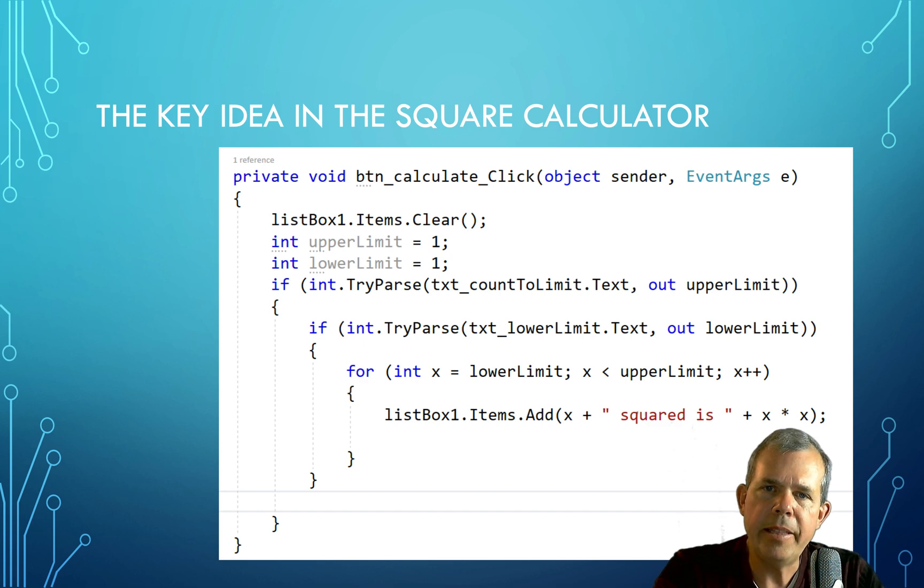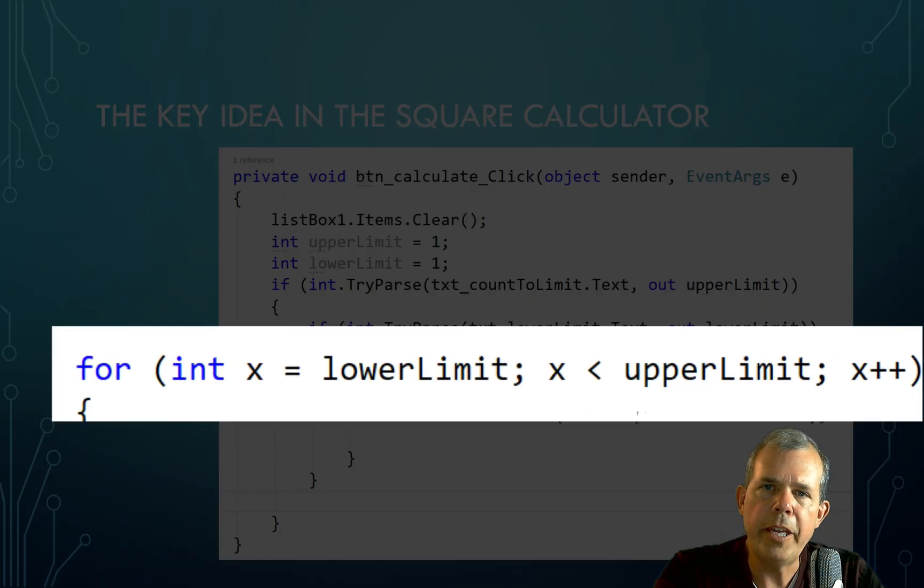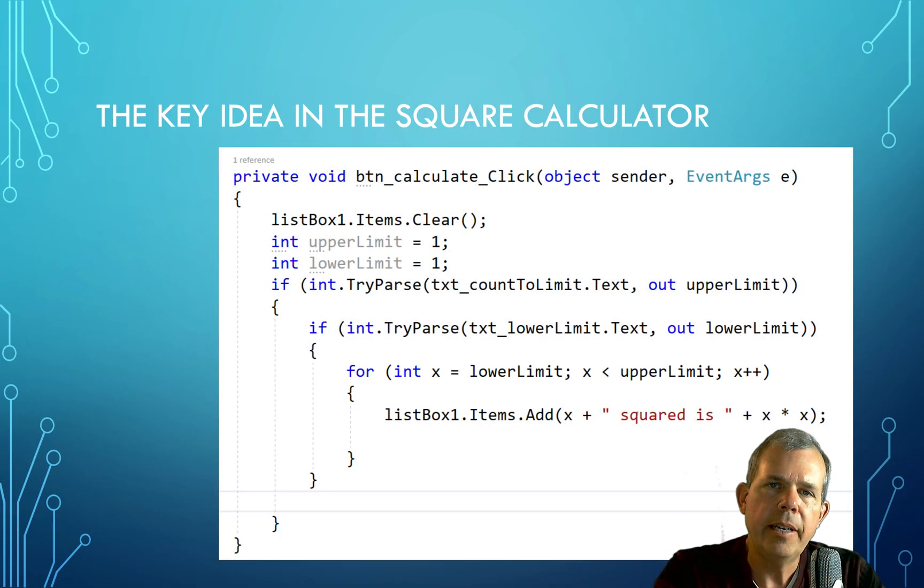And so the key idea behind the square calculator is going to show up here in this statement called the for loop. A for loop allows you to start at a point, end at a point, and do a repetitive process in between. And so those three programs are what's coming up next.